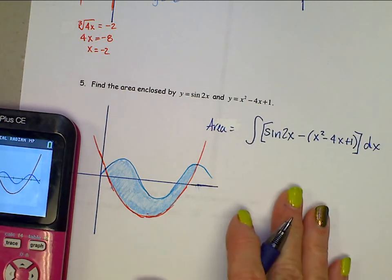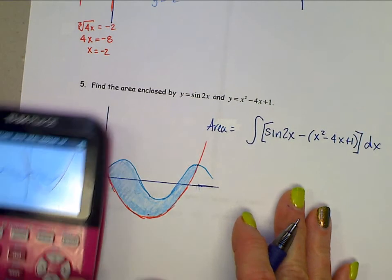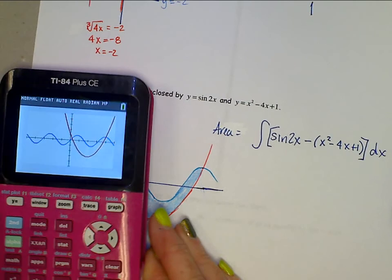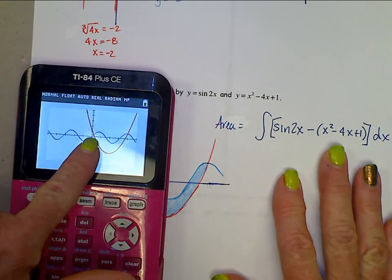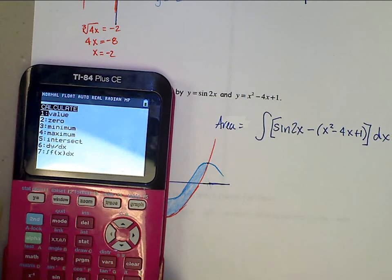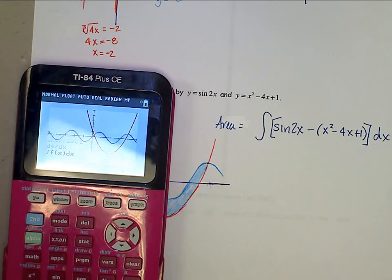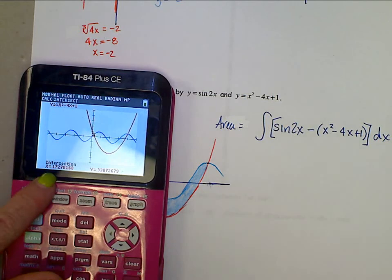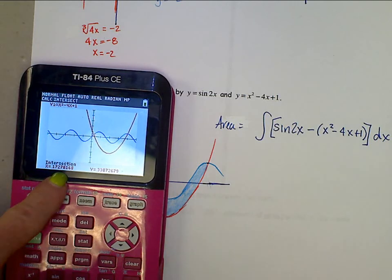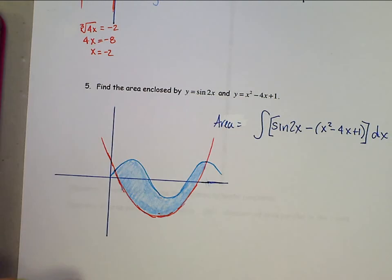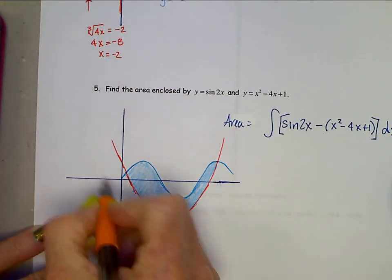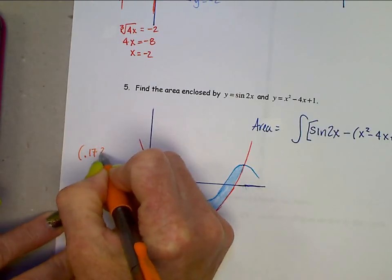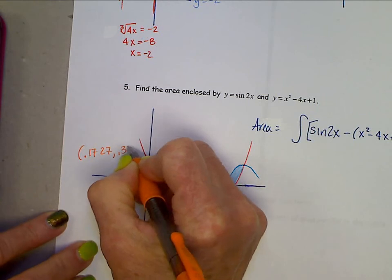Okay, now points of intersection. We need to find them. And you're going to use your calculator to find those points of intersection. So let's find this first one over here. Going through that second calc menu, intersect. And I'm finding that the first point of intersection is 0.1727. So that's 0.1727, 0.3387.